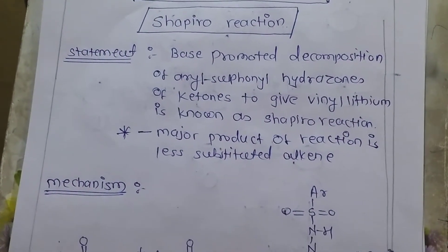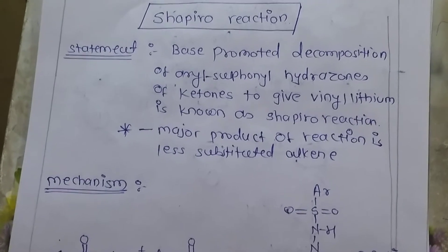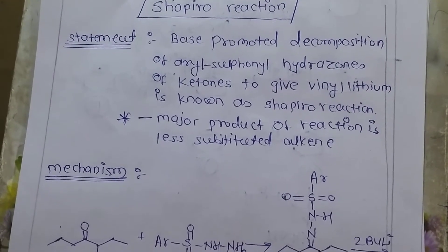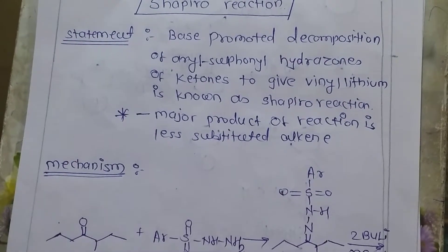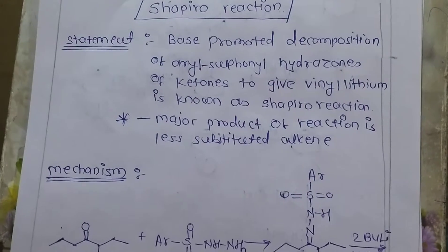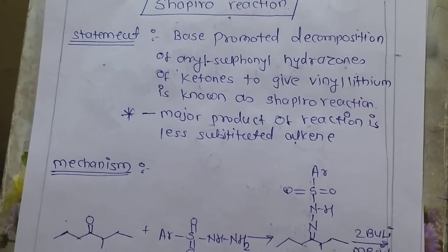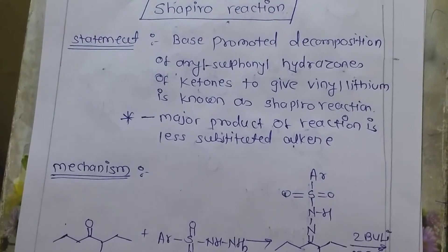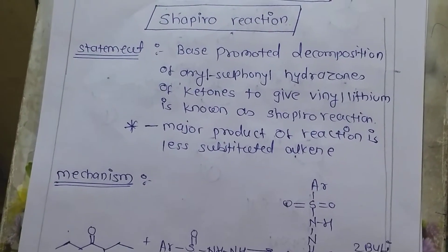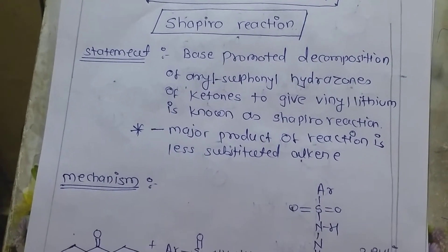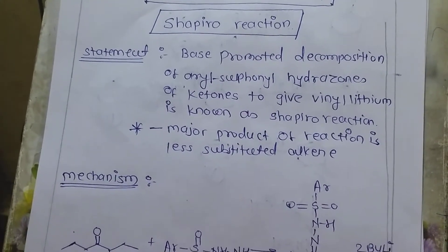Let's see what is a Shapiro reaction. Base promoted decomposition of aryl sulfonyl hydrazones of ketones to give vinyl lithium is known as Shapiro reaction. In short, the major product of this reaction is less substituted alkene. Less substituted alkene reacts with lithium to give vinyl lithium.